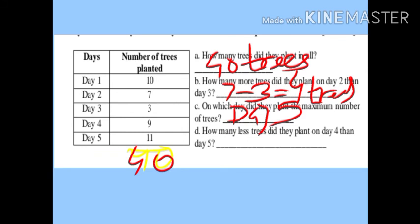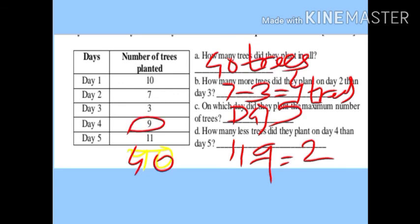Fourth question: how many less trees did they plant on Day 4 than Day 5? Day 4 has 9 trees, Day 5 has 11. The word 'less' means subtraction. Subtract smaller from bigger: 11 minus 9 is 2. So 2 less trees were planted on Day 4 than Day 5.